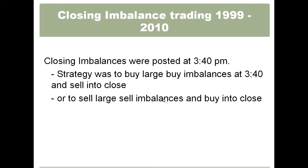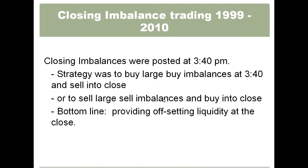This was a lot of very relevant information. When it came out at 3:40, it was saying there's a huge buy imbalance, so opportunistic traders would come in, buy the stock ahead of those imbalances, and then try to sell into the close into that market on close imbalance. Basically the whole play was just to provide offsetting liquidity at the close — that's how we were making money off of this.